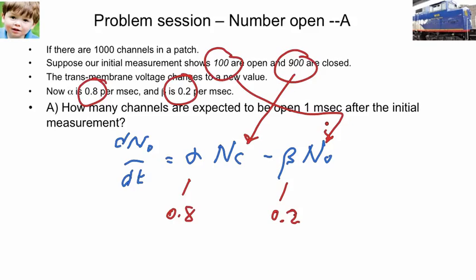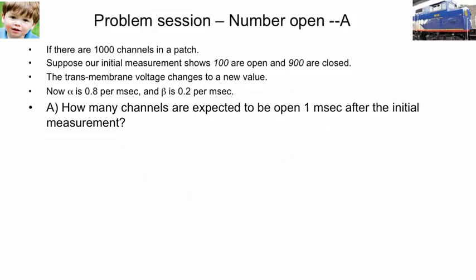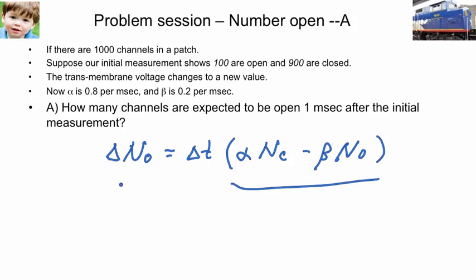And if we then rewrite our equation and say, well, look, then delta N0 will be equal to delta t times what we had before, alpha times the number of closed minus beta times the number open. We know this part and we'll find the change in the number of channels that are open. So the number that are open at the end of one millisecond will be